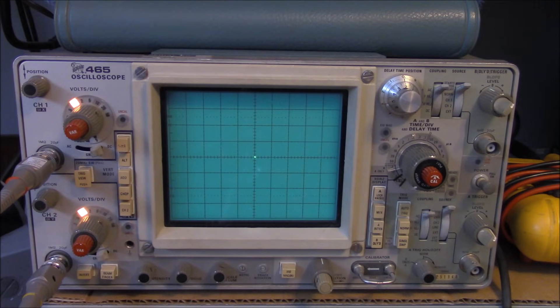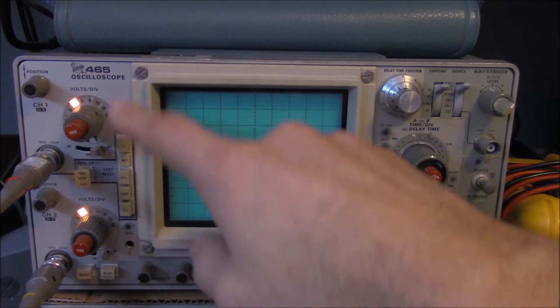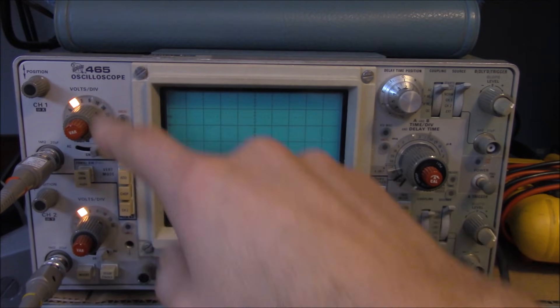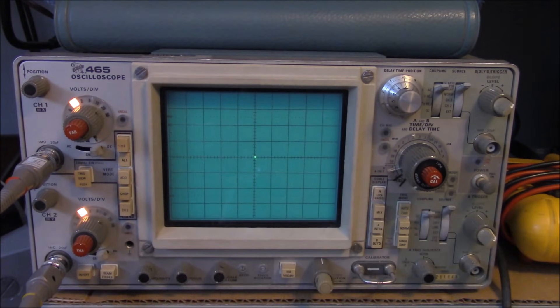A little bit about XY mode. We have our two channels up on alternate, set at 1 volt per division. Over to the left, out of sight here, we have a Heathkit power supply with a 1 volt output, approximately.